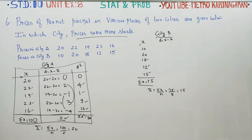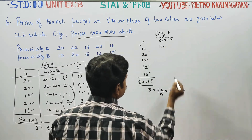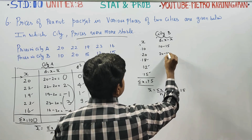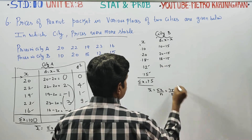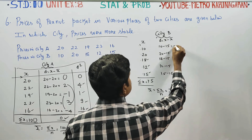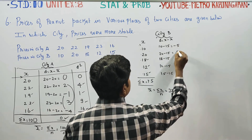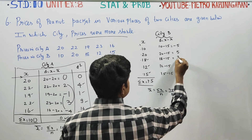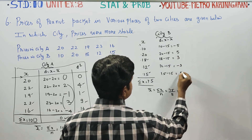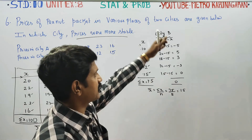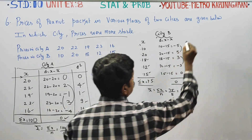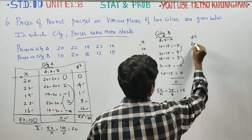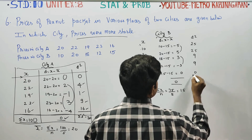Now entering the City B table. We need to find x and d values. d equals x minus x̄, where x̄ is 15: 10 minus 15 equals minus 5; 20 minus 15 equals plus 5; 18 minus 15 equals plus 3; 12 minus 15 equals minus 3; 15 minus 15 equals 0. In the actual mean method, the sum of d should equal 0 — confirmed.